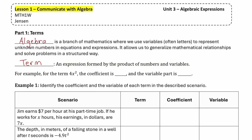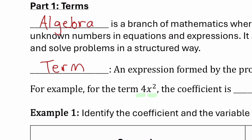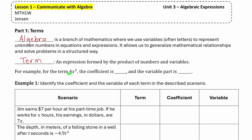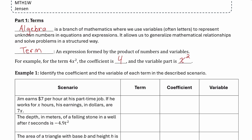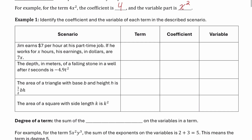For example, the term 4x squared is a product of a number, 4, and a variable, x squared. The number part of that term, the 4, we call the coefficient. And the variable part of the term is x squared. Now let's do example one, where we look at different terms and practice distinguishing between what's the coefficient and what's the variable part of each term.